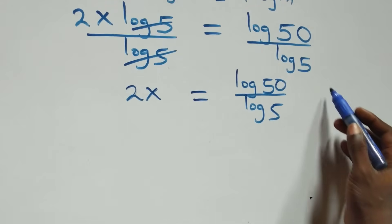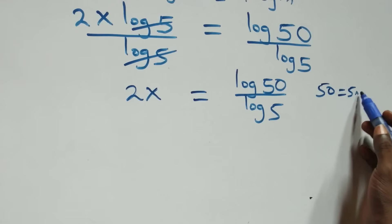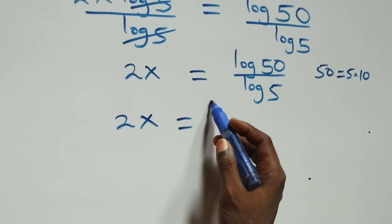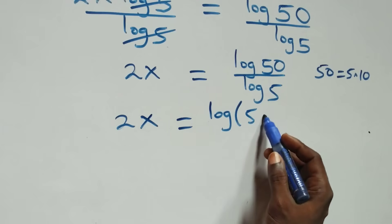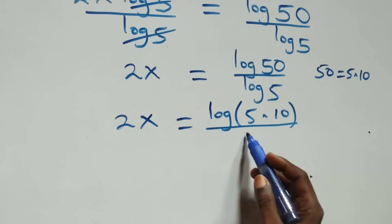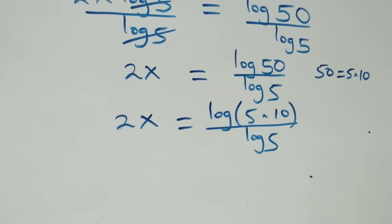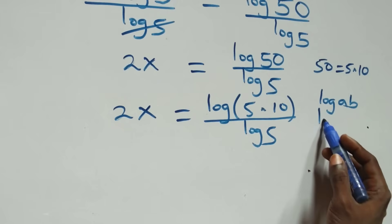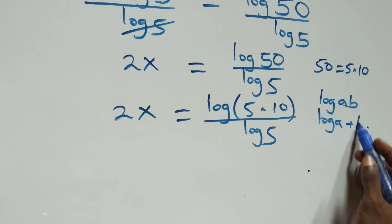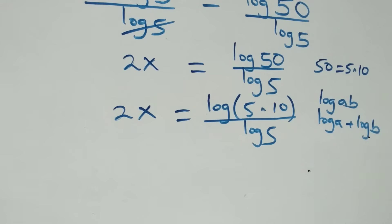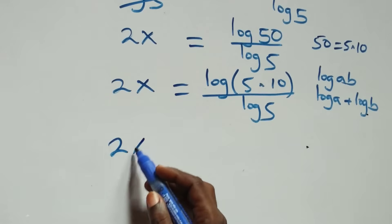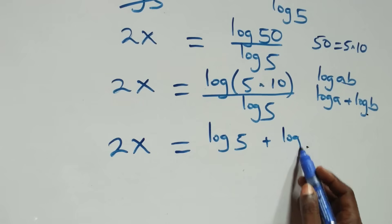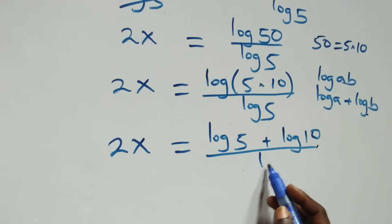From here, we can write 50 as 5 times 10. Which implies here we have 2x equals to log(5 times 10) over log 5. Then, this follows from the law of logarithm: when we have log(a times b), it is the same thing as log a plus log b. So here we have 2x equals to log 5 plus log 10, all over log 5.